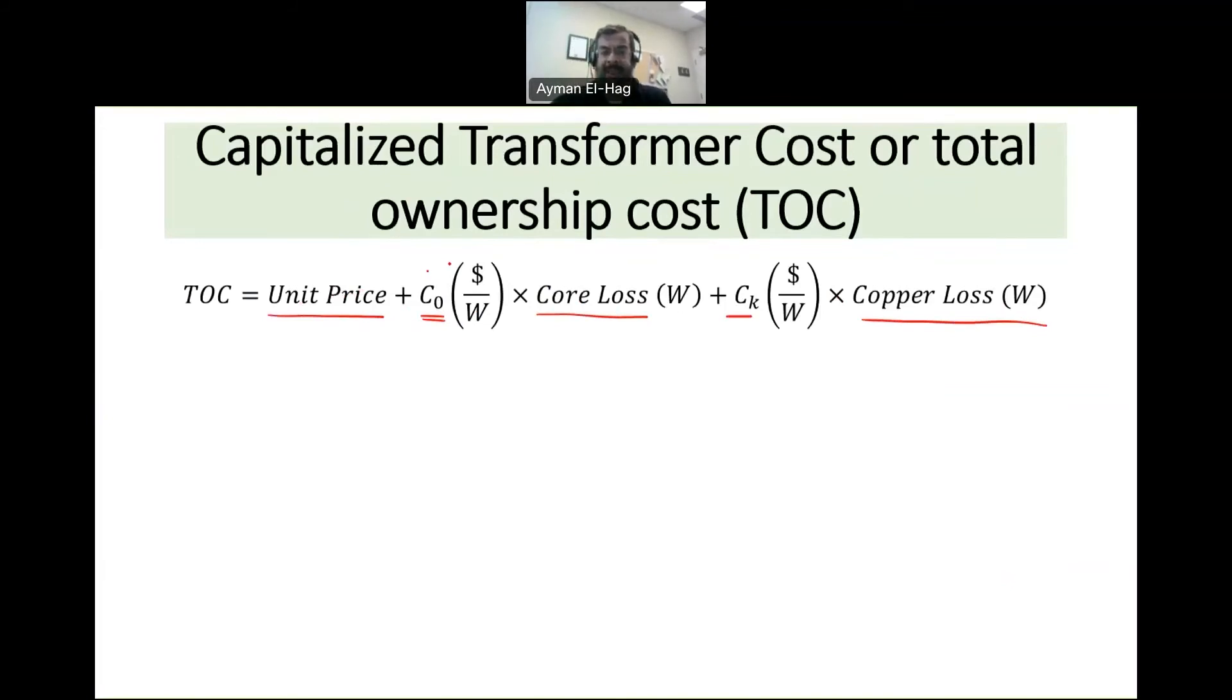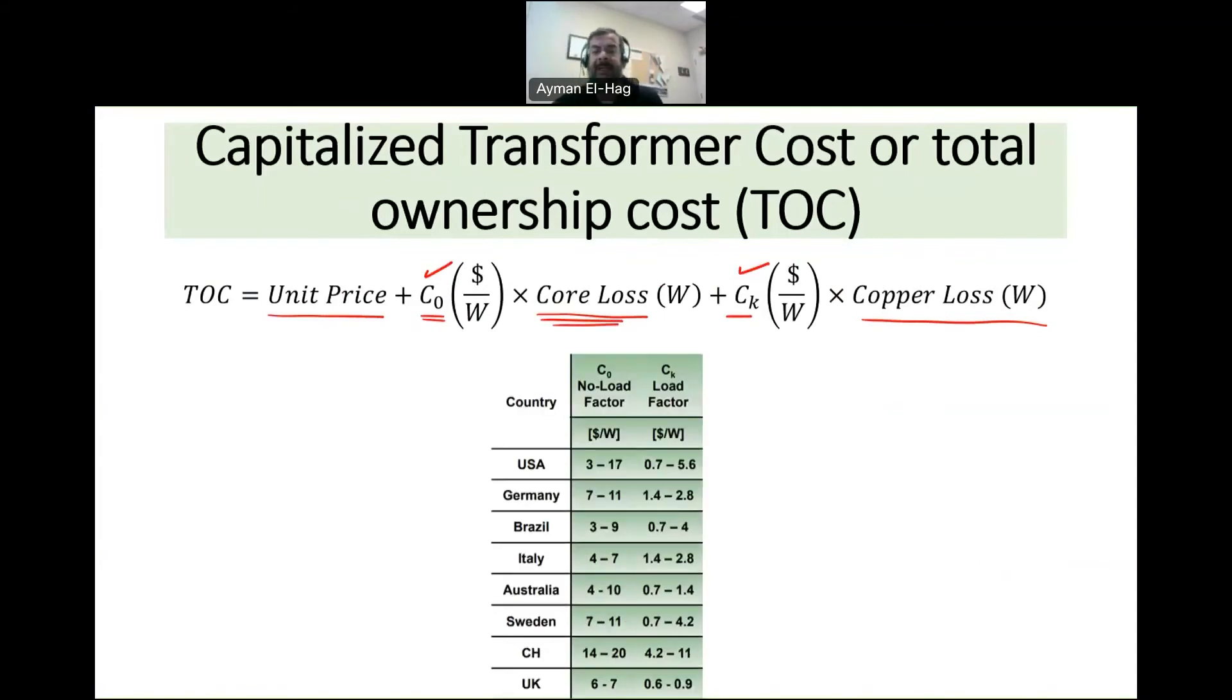Now I think with this understanding you will figure out that C₀ should be larger than Cₖ, or the core loss should be more important than the copper loss. Why? Because the core loss stays 24/7 all the time - we have the maximum core loss - but the copper loss is varying, it's not constant.